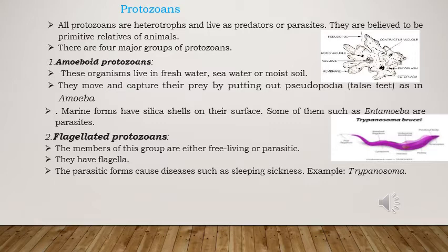The next one is the flagellate protozoans. These are free-living or parasitic protozoans that are aquatic and have flagella for locomotion. Flagella is a hair-like structure that is present on the body and helps in the locomotion process. These are parasitic in nature and cause diseases — for example, sleeping sickness is caused by the flagellate protozoan Trypanosoma.